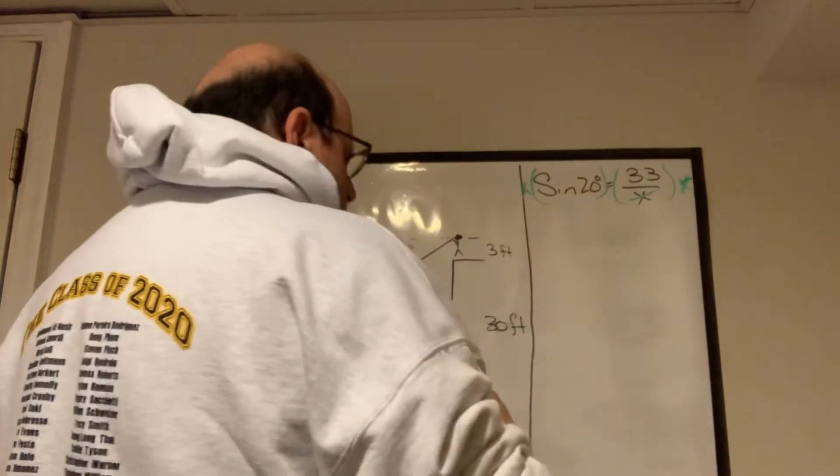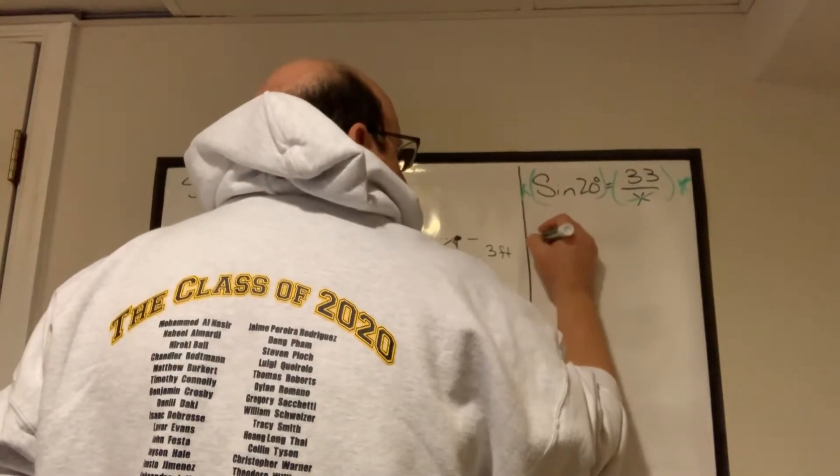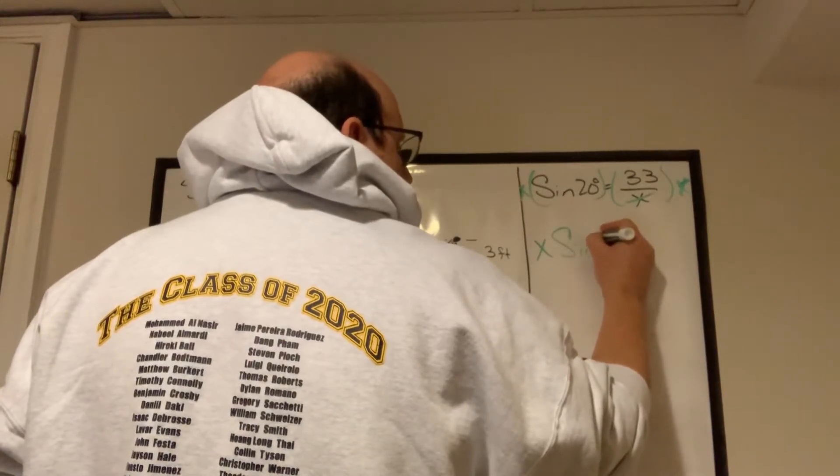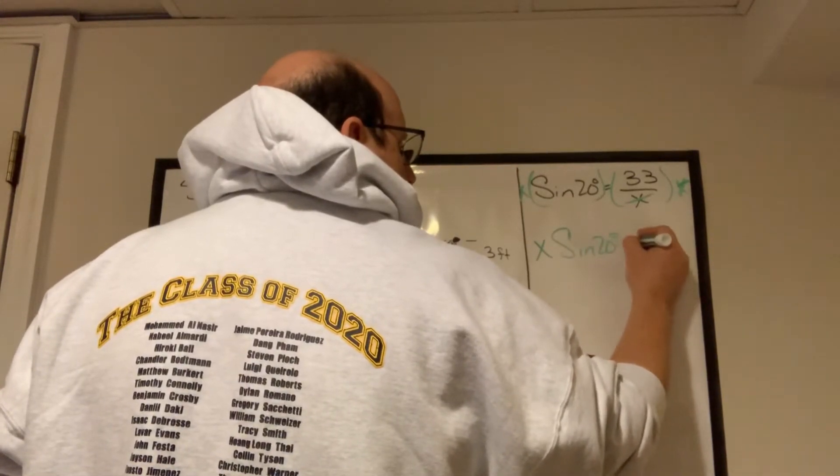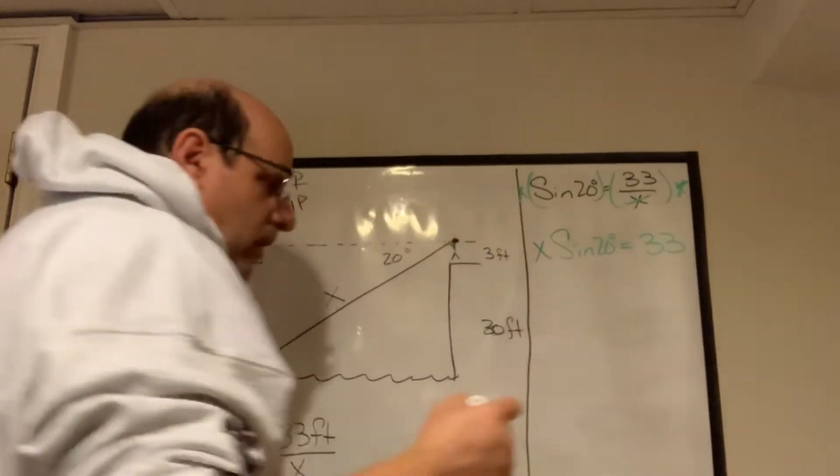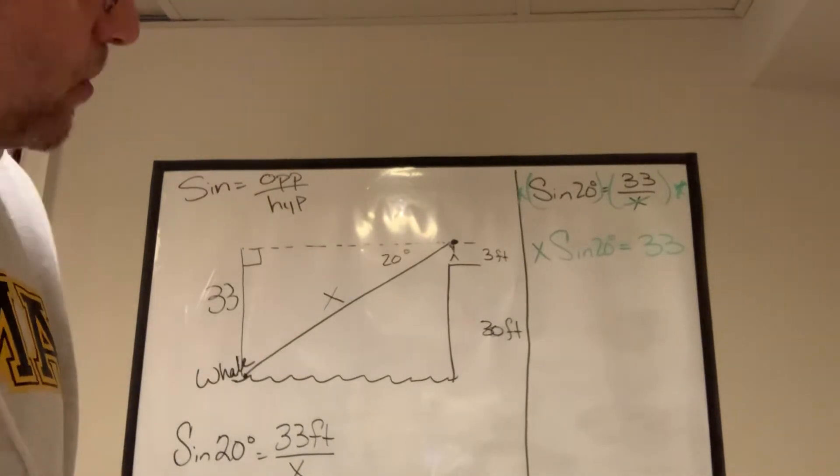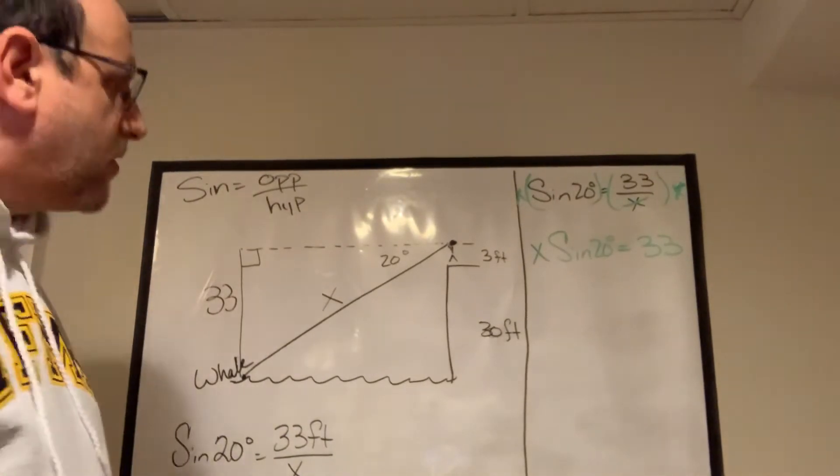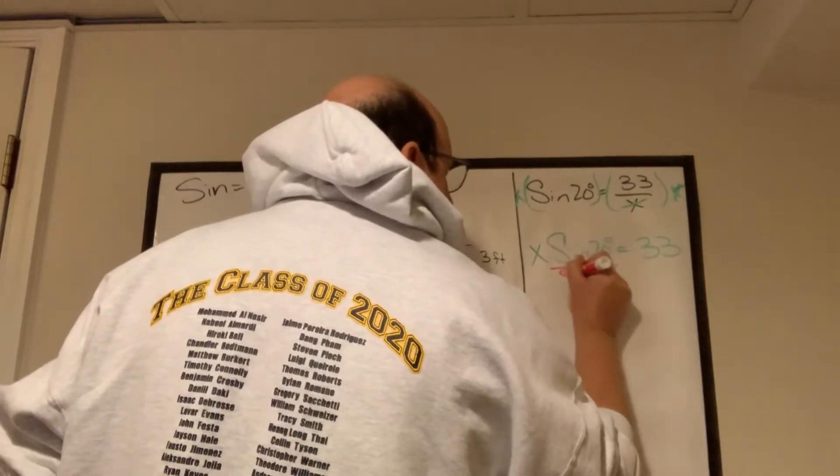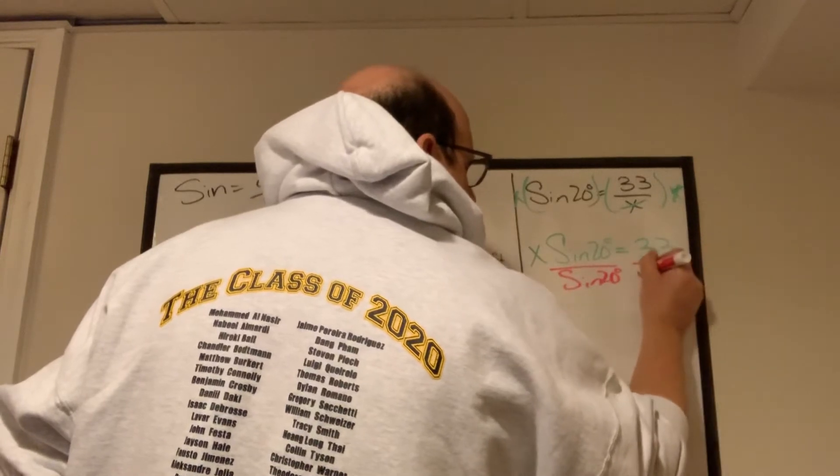And so the new equation would be X times the sine of 20 degrees is 33. Okay, well, that's all well and good, but I want X by itself. So now I can get X by itself by dividing by the sine of 20 degrees on both sides.